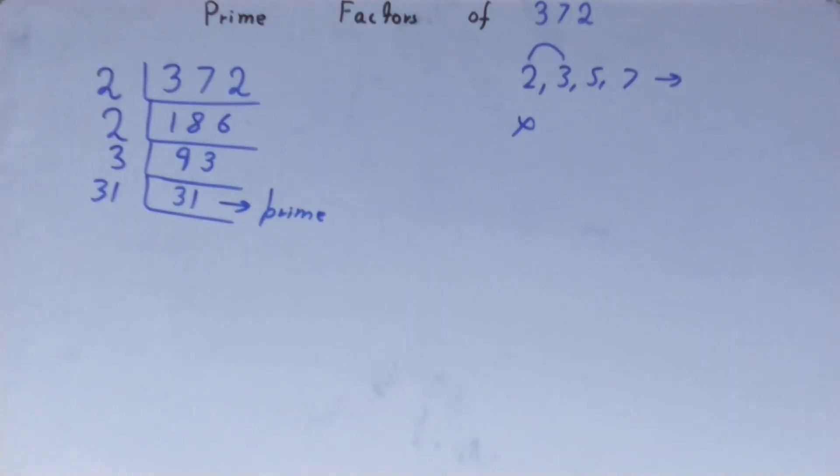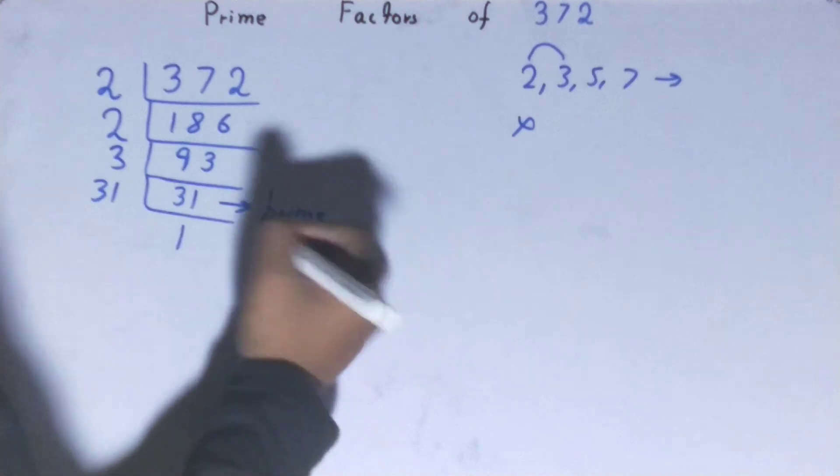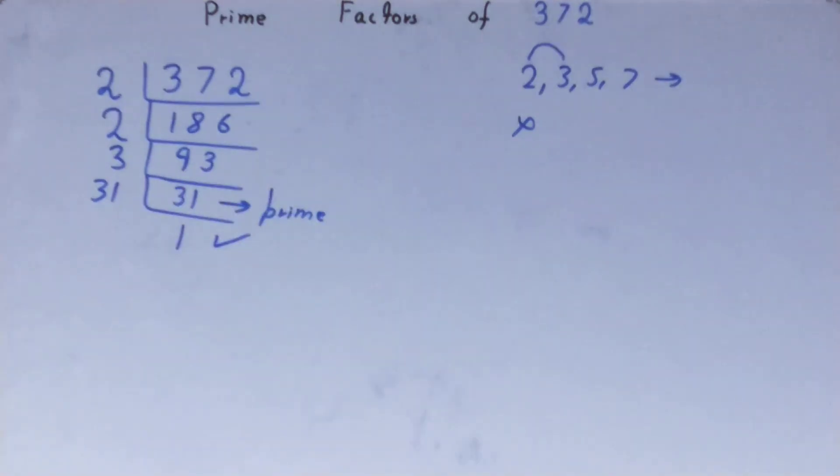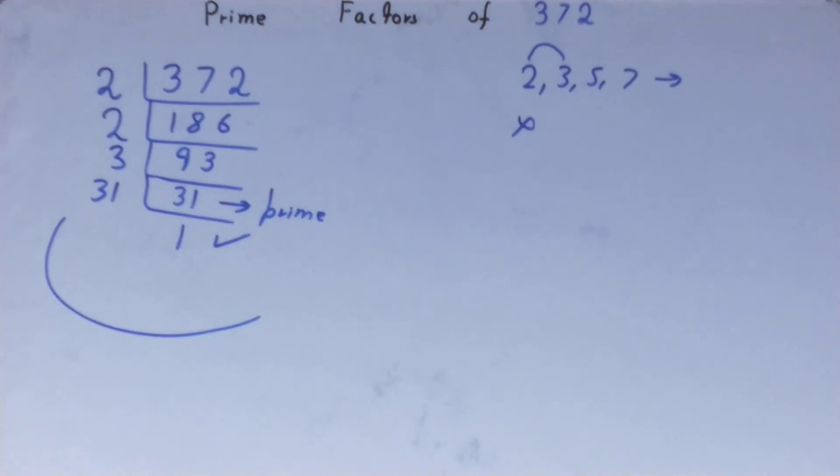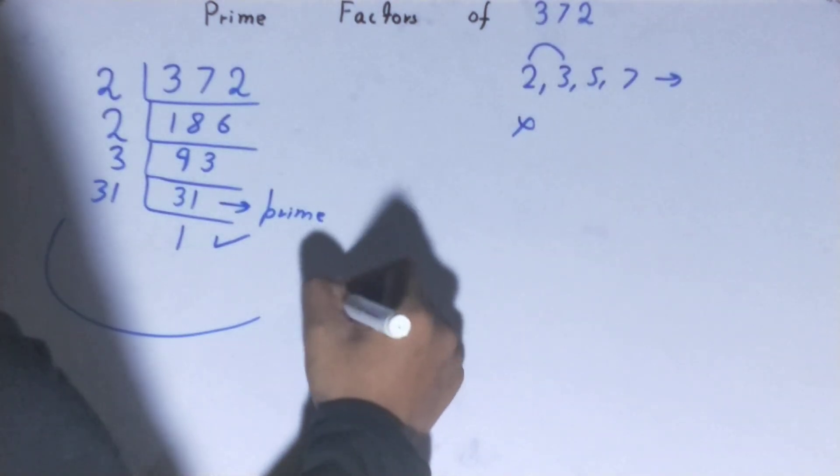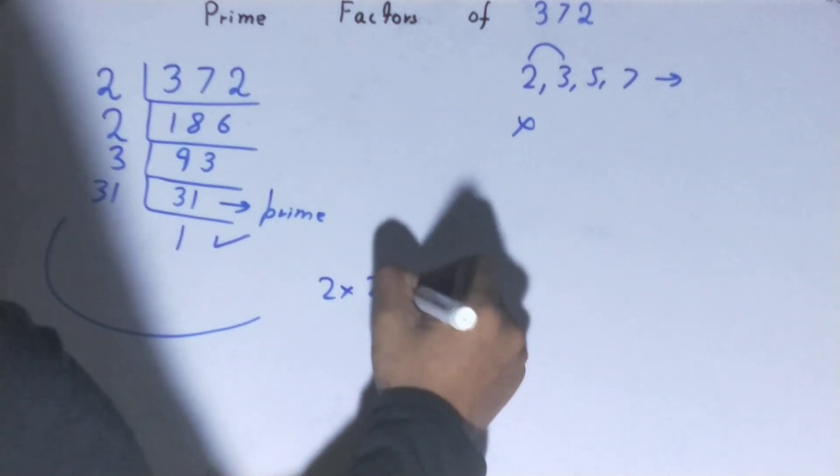And when you will do so, you will be left with 1. And when you are left with 1, the work is done. And whatever you have on the left-hand side will be the set of prime factors for the number 372, that is 2 × 2 × 3 × 31.